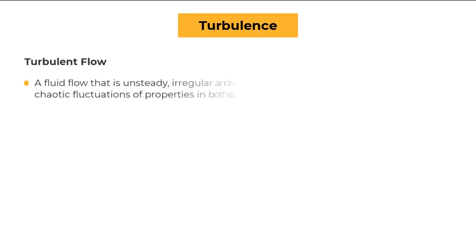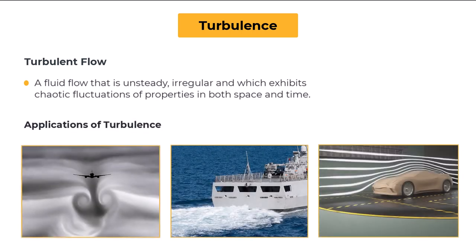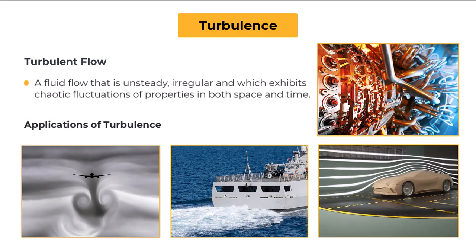A fluid flow that is unsteady, irregular, and which exhibits chaotic fluctuations of properties in both space and time is called a turbulent flow. Turbulence is all around us in all kinds of engineering devices spanning a wide range of applications: aerospace, naval, aerodynamics and combustion systems to name just a few.